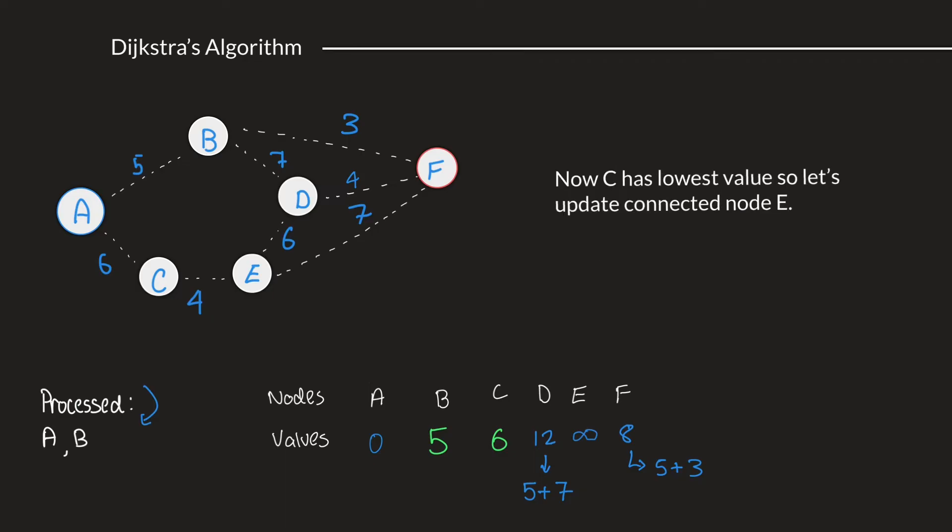If you look at the nodes and values table right now, we can see that C has the lowest value between the unprocessed nodes. So, moving on to the next unprocessed node, we go to C, and C is directly connected to E. So, we'll be updating E. Going from A to E would be 6 plus 4, which is 10. Let's put that value down as 10, and put C in the list of processed nodes.